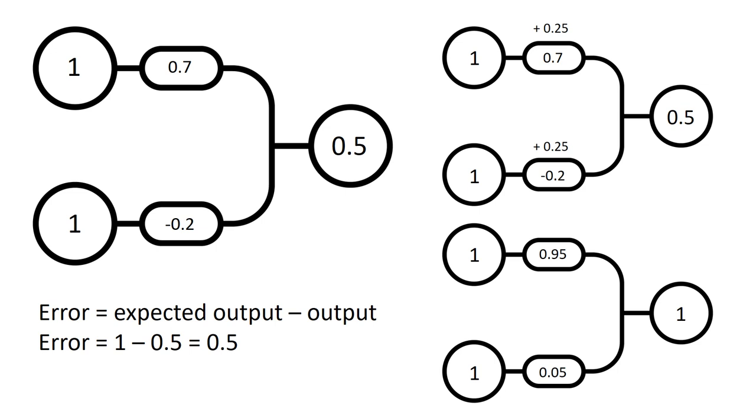So 1 minus 0.5 equals 0.5, which means the error is 0.5. We adjust everything according to that.